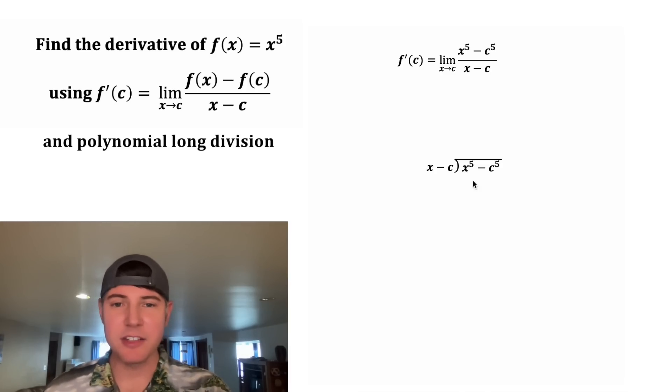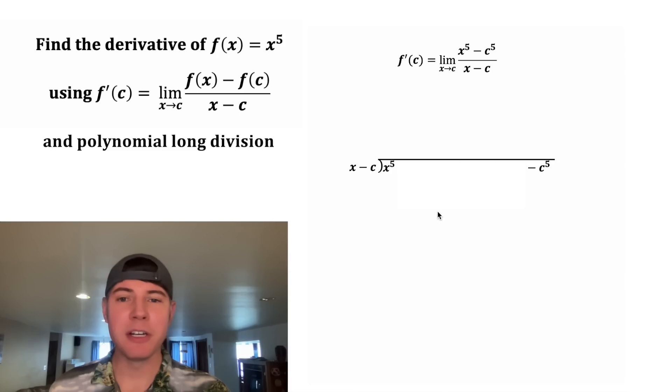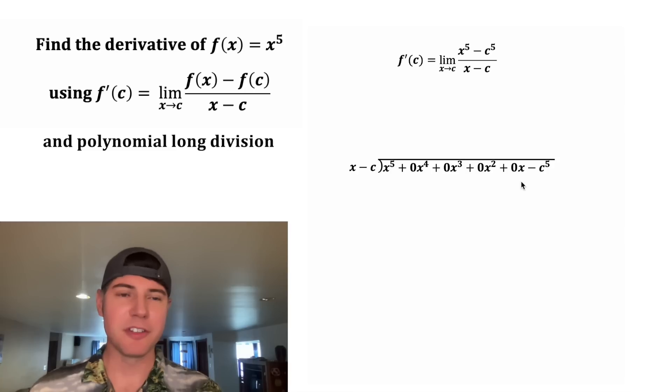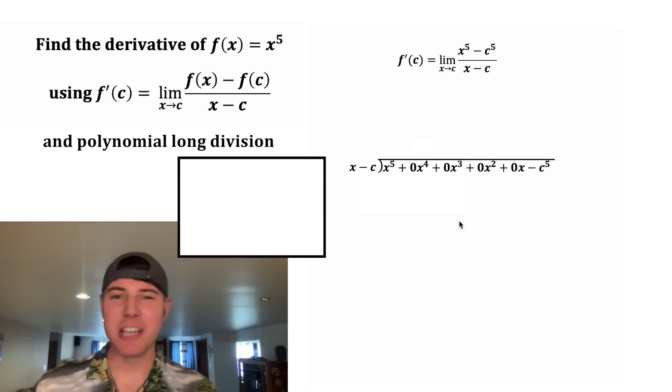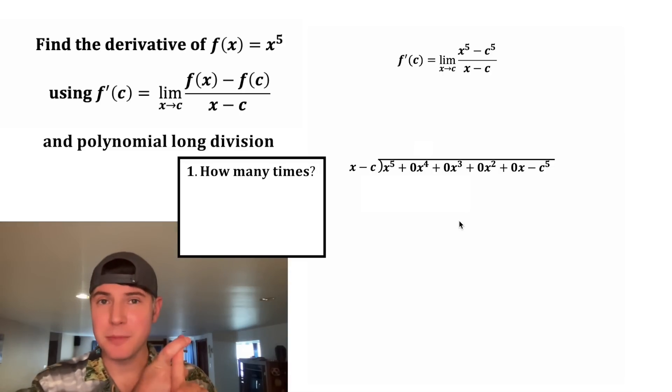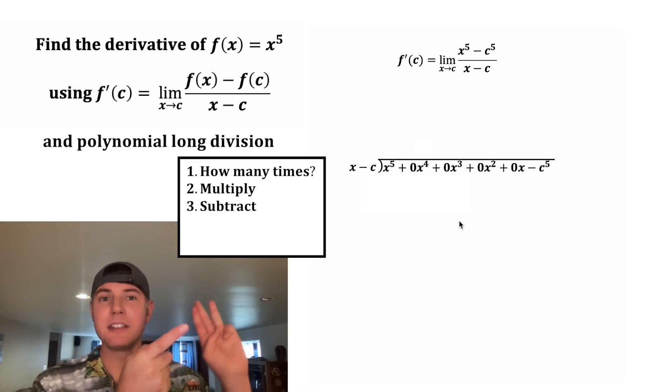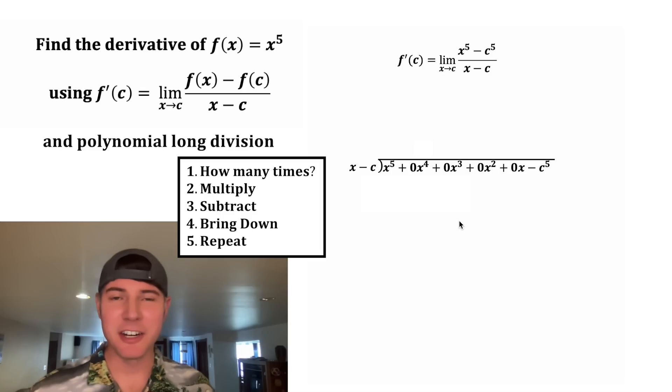It's going to be written like this, (x^5 - c^5) divided by (x - c). And before we actually do the long division, we need to put in all of our 0 placeholders. So we haven't changed anything. We just put in 0 for x^4, 0x^3, 0x^2, and 0x. Now we're ready to do the polynomial long division. So the steps of long division are how many times will it fit, multiply, subtract, and bring down. And then you're going to repeat.